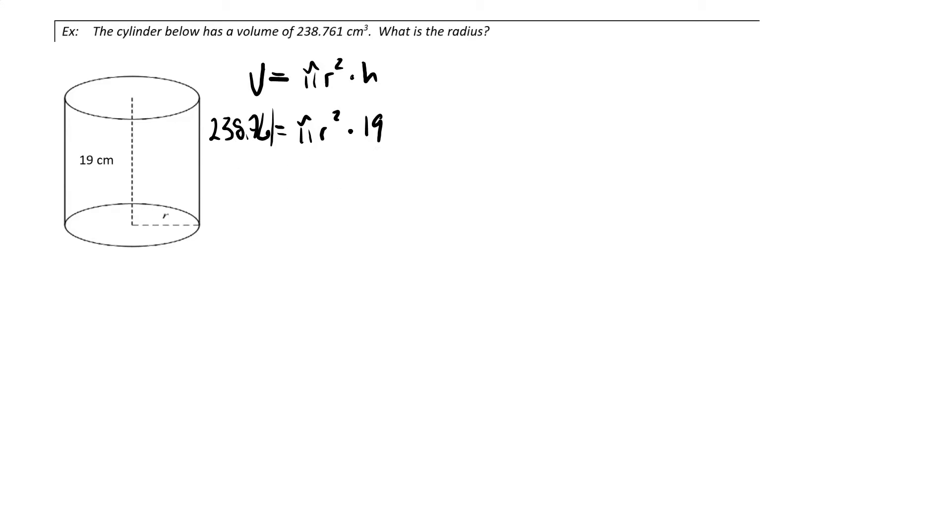So let's see how that works out. If we divide both sides by pi and 19, we end up with 238.761 divided by 19 pi equals r squared.